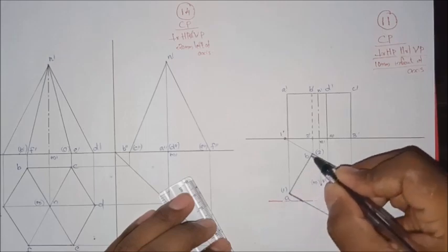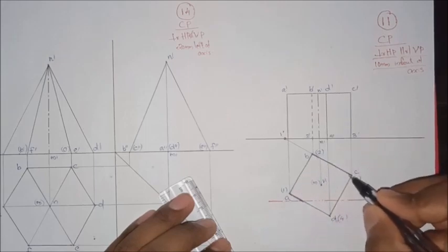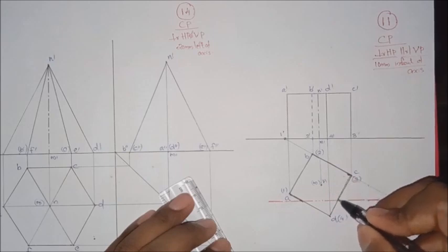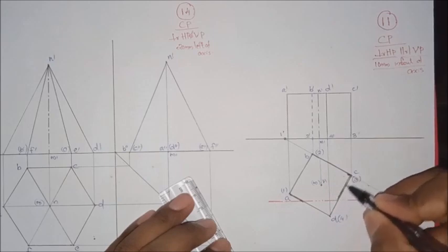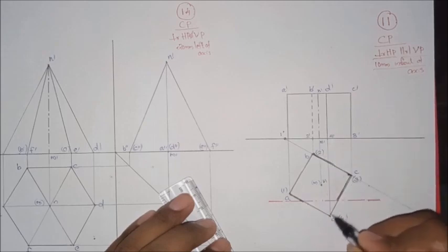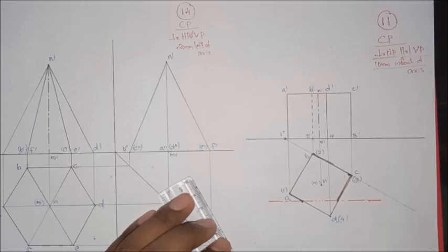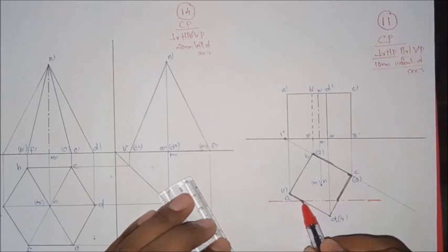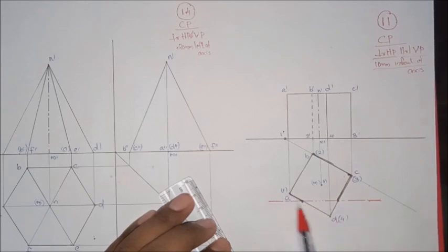Here we are going to add the dark portion, and here we are going to add the front portion. Here we are going to cut here. We are going to add one line — because a, b — top and one-fourth, bottom.